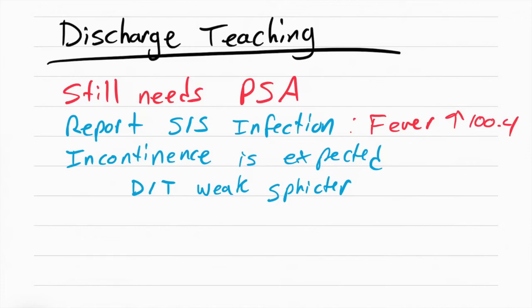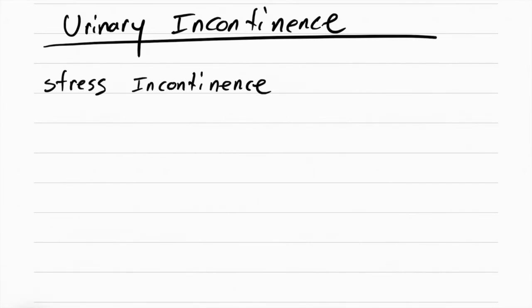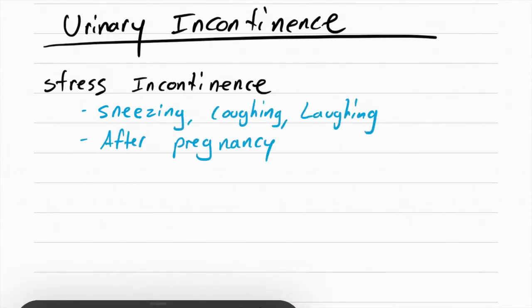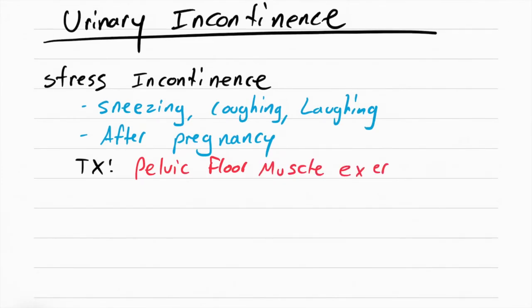Incontinence is something that we learned in fundamentals, but let's review it. Urinary incontinence is when the patient pees themselves. The first type is called stress incontinence. This is caused by sneezing, coughing, or laughing. This usually happens after pregnancy. The pressure builds up and then the pee comes out. What you want to do for this patient is have them do pelvic floor muscle exercises, they're also called Kegel exercises.